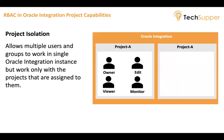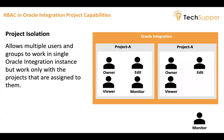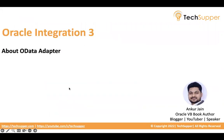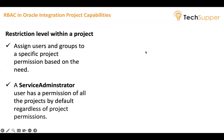Similarly, you can have a Project B, and for Project B you can also have an owner, editor, viewer, and monitor. By using RBAC, you are isolating your projects between multiple groups and users. The second capability is restriction level within a project — you can assign users and groups to a specific project permission based on need. For example, a group allowed to monitor runtime instances within one project cannot monitor resources inside a different project.